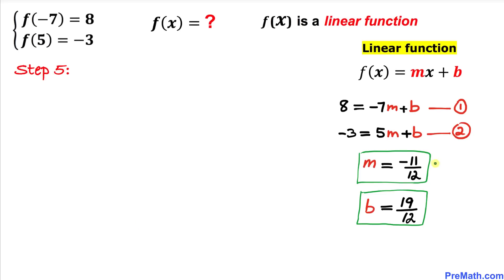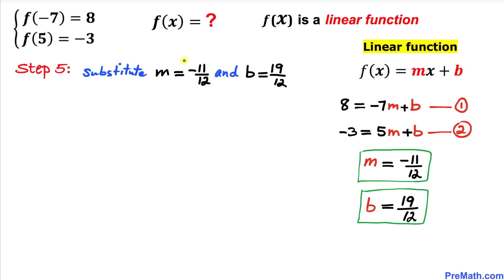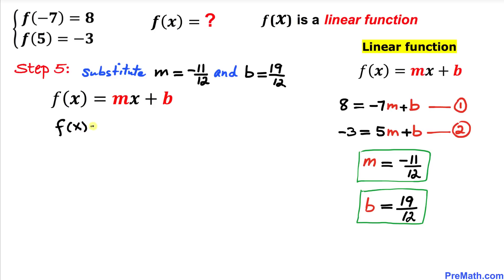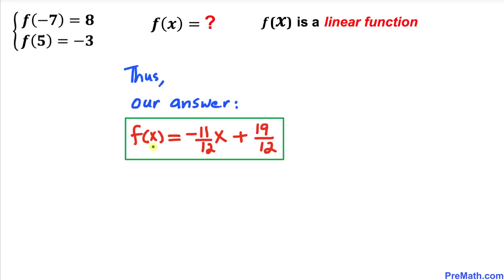Here's our final step. We have figured out our m and b values. Let's substitute these into the linear function f of x equal to mx plus b. Replacing m and b, our function f of x equals negative 11 over 12 times x plus 19 over 12. So our final answer is f of x equals negative 11 over 12 times x plus 19 over 12.